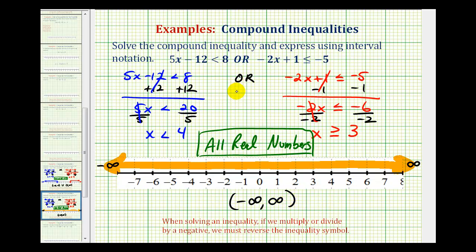So it is important that we recognize this inequality as an OR. Because if it was an AND, it would have just been the overlapping interval. But in this case, because it's an OR, it's actually all real numbers.